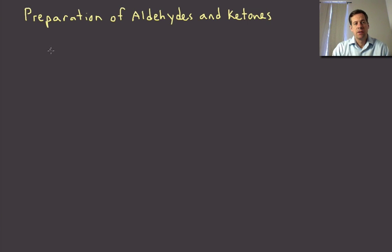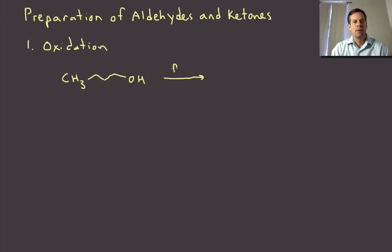A lot of this we've already covered, so most of this will be review. One of the most straightforward ways to make these functionalities is through oxidation, something we talked about in the alcohol section. For the synthesis of an aldehyde, you can simply oxidize a primary alcohol with PCC as long as you have a solvent that doesn't involve water.